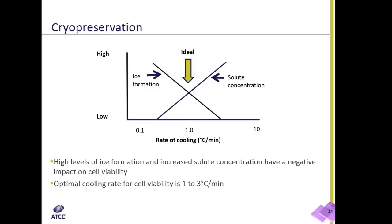For most cells, the optimal rate of freezing is between 1 and 3 degrees Celsius per minute. As you can see in the diagram shown, at this temperature range, the negative impact of intracellular ice formation is at equilibrium with increased solute concentration, maximizing cell viability.